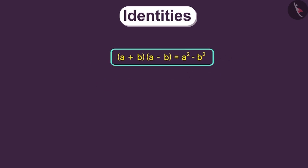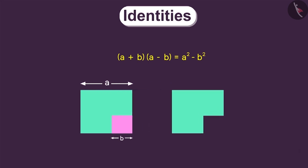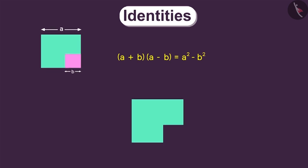There is also an interesting way to prove this identity. Let's say we have a square and the length of its side is a. And we will remove a small square with side b from it. Can you tell me what will be the area of this remaining portion? There are two ways to find the area of this remaining portion. Let's look at the first one.